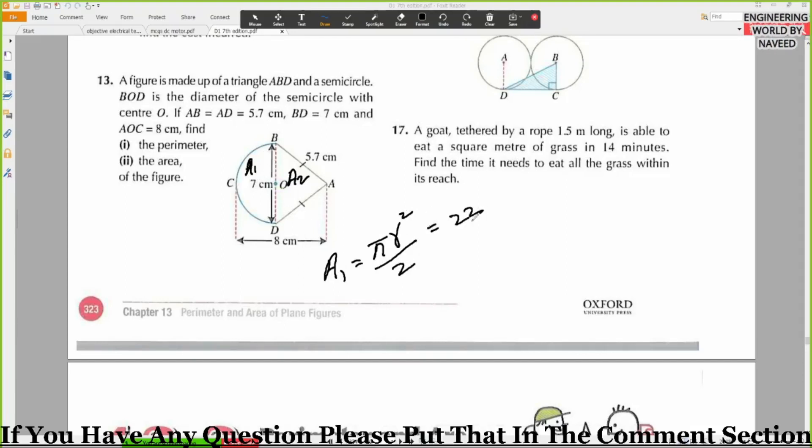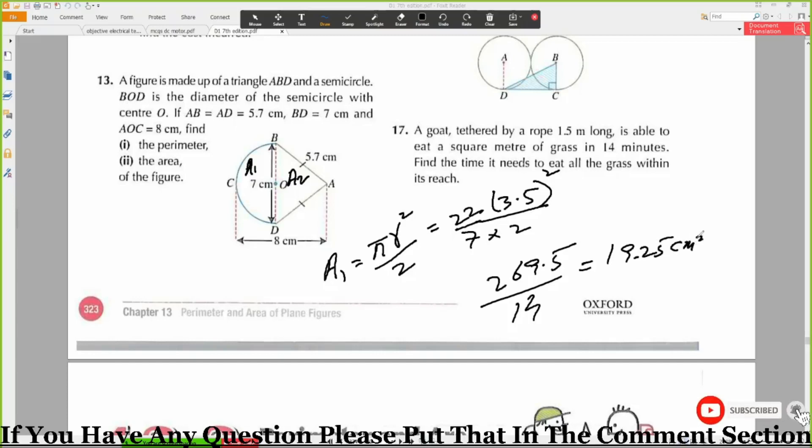π is 22 divided by 7, and R is 3.5. 3.5 is square, and divide by 2. So 3.5 square times 22, you will get 269.5 divided by 14, so you will get 19.25. So this is centimeter square. So this is A1.